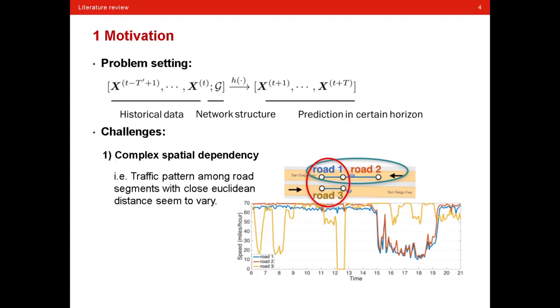The first is the complex spatial dependence. As you can see, the traffic pattern among road segments with close euclidean distance seem to vary. For example, road 1 and road 2 is very close to each other and their traffic pattern seems similar. But for road 1 and road 3, they also have a close euclidean distance, yet their traffic pattern is extremely different.